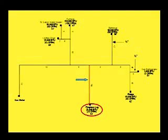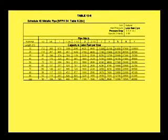The 15-foot section that supplies gas to the fireplace log has a demand of 25 cubic feet per hour and is 53 feet from the meter. Refer to table 12-8, 60-foot row — 25 will fit under 65 — and see that a 1/2-inch pipe will accommodate the 25 cubic feet per hour demand for the fireplace log.